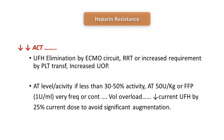Antithrombin replacement can be given as AT concentrate at 50 units per kg, or as FFP — but FFP contains only 1 unit per mL, requiring large frequent volumes that can cause volume overload. Therefore, AT concentrate is preferred. Importantly, when you give AT replacement, you must simultaneously reduce the heparin infusion by at least 25 percent — for example, if at 50 units per kg per hour, reduce to around 30 units per kg per hour — to avoid excessive anticoagulation.